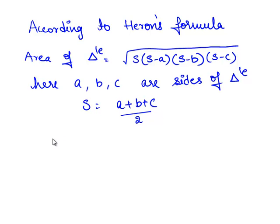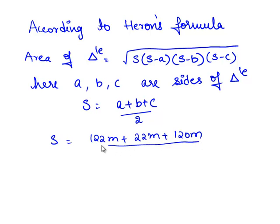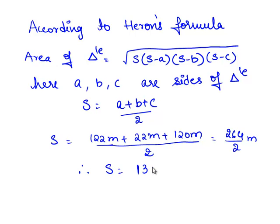Now let us find the semi-perimeter. Therefore, s is equal to a plus b plus c divided by 2, that is 122 meters plus 22 meters plus 120 meters, divided by 2. This is 264 meters divided by 2. Therefore, s is equal to 132 meters.